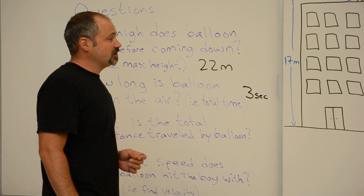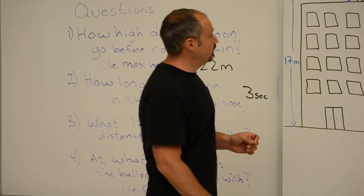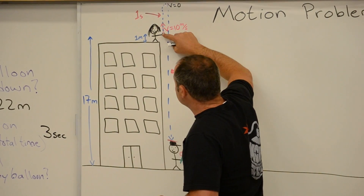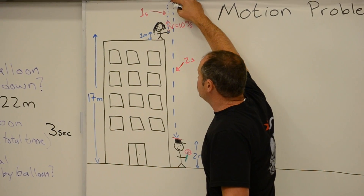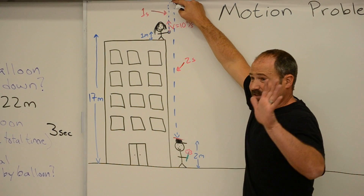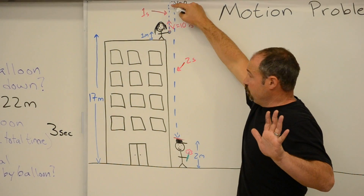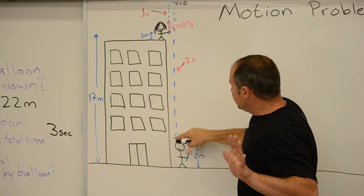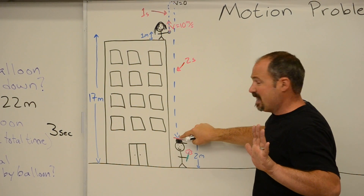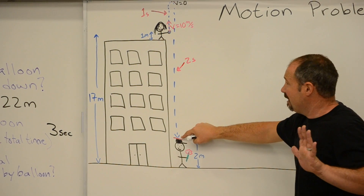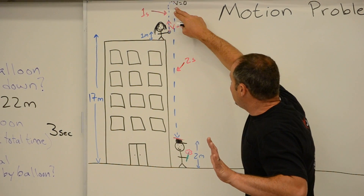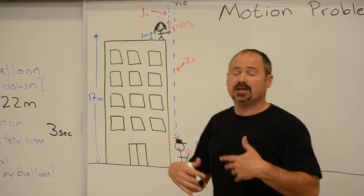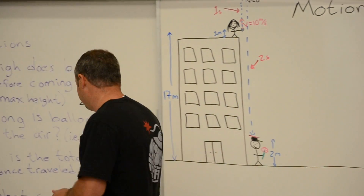The total distance is not too hard because we already found that it went up to 22 meters. It started at 17 and went up to 22 — that's an increase of 5 meters. So the balloon went up 5 meters, then dropped all the way down to the boyfriend's head, which is 2 meters above the ground. That's a distance of 20 meters, so 20 plus 5 is 25 meters total.